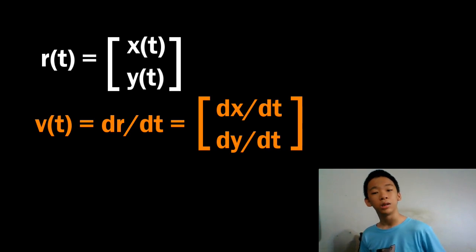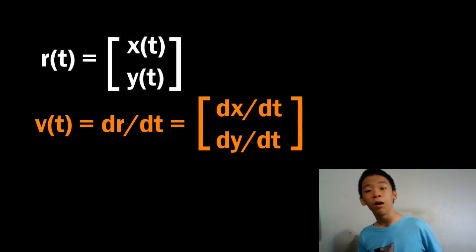To take the derivative, we simply differentiate each component. So we get v of t equals dr over dt equals dx over dt dy over dt. We're also going to use the power series of e to the x later on.